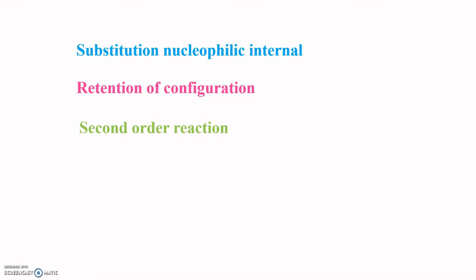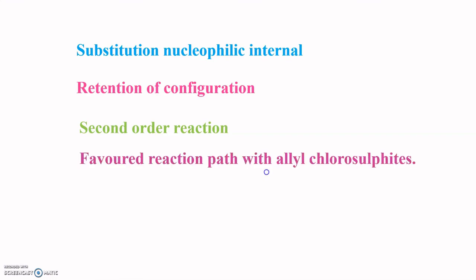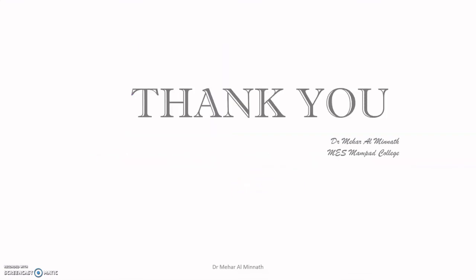SNI is a favored pathway for allylic chlorosulphides. Changing the solvent from ether or dioxane to pyridine shifts the mechanism from SNI to SN2, giving an inverted rather than retained product. With allylic systems, allylic rearrangement occurs. These are the major points of the SNI mechanism.